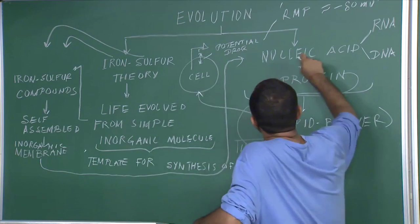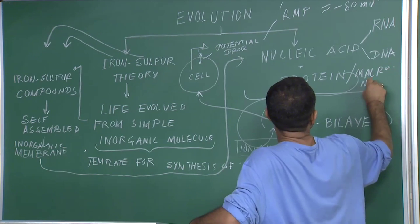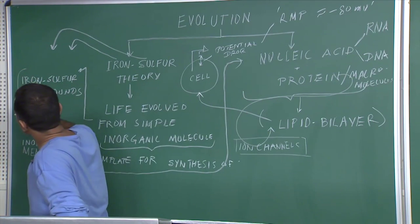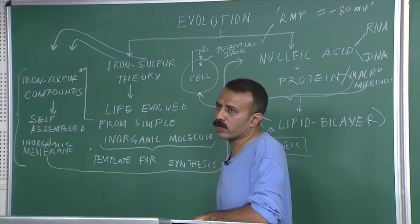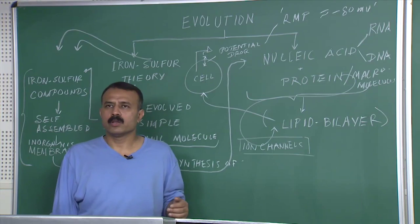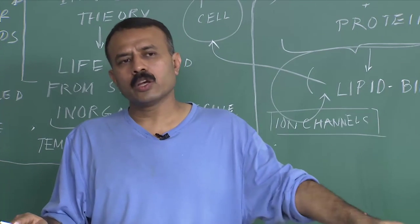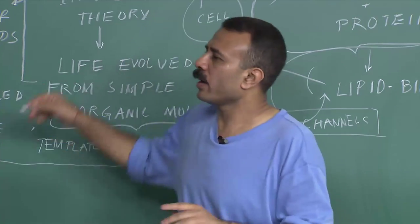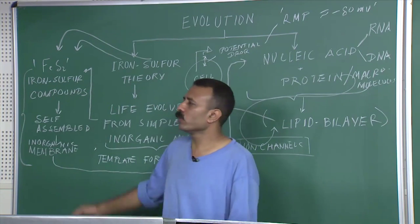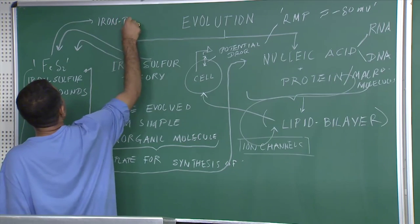If we assume that these inorganic molecules led to the formation of nucleic acids, proteins, and other macromolecules including lipids and carbohydrates, then it is a good idea to understand what the electrical properties of these inorganic molecules are — what we call the modern-day cell. One molecule at the center stage of the iron sulfur theory is FeS2, commonly called iron disulfide because there are two sulfurs, or iron pyrite.